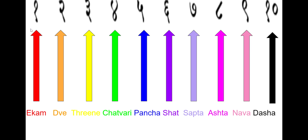First is going to be Sanskrit. It's an ancient Indian language. Up here you can see these are all the numbers written, and on the bottom there are the numbers spelled out in English. Whatever color the word is written in, the arrow in the same color matches and points to the correct number.